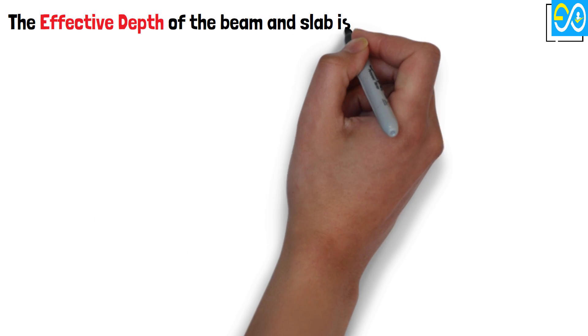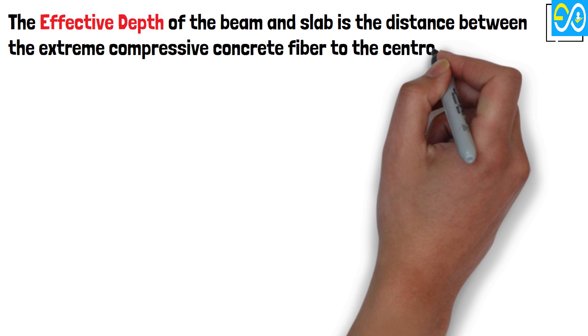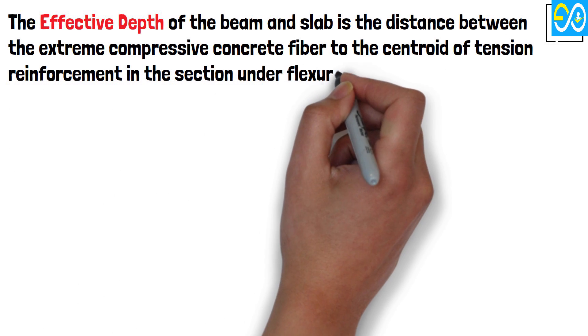The effective depth of the beam and slab is the distance between the extreme compressive concrete fiber to the centroid of tension reinforcement in the section under flexural conditions.